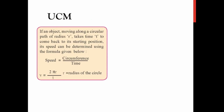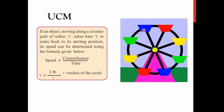Now, for UCM, let us understand how it works mathematically. The speed in uniform circular motion can be given by the circumference of the path divided by the time taken by the body to complete one full revolution. This is the exact way to represent the speed of UCM.